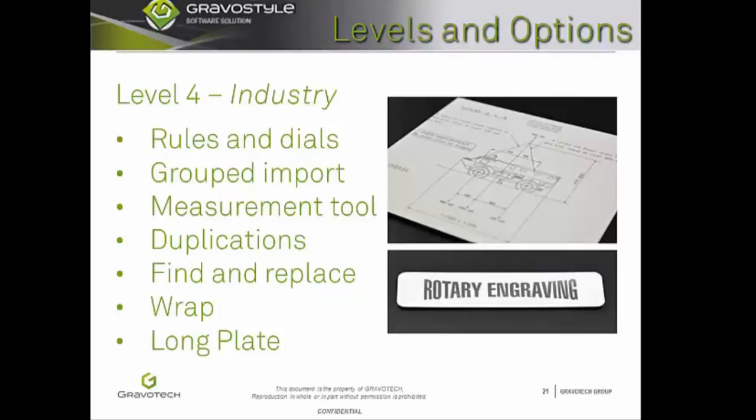The fourth level of Gravastyle is Industry. This level is specifically designed for people engraving items for the industrial sector such as machine plates, identification and traceability of parts, printed circuits, linear and 2D barcodes, and more. Rules and Dials: this function allows you to create precise rulers and dials for multiple applications. Grouped Import saves you valuable time on production by importing a group of files with a single click and positions them automatically to optimize the material being used. The Measurement Tool allows you to measure length, an angle, safe box, etc., with pinpoint accuracy.